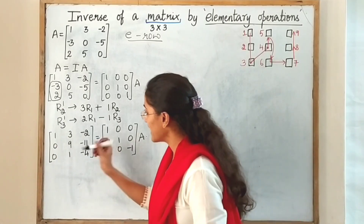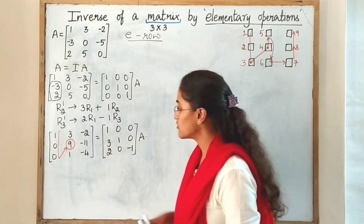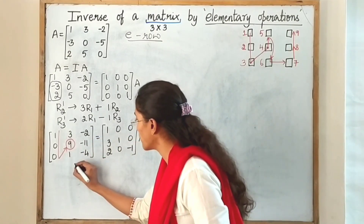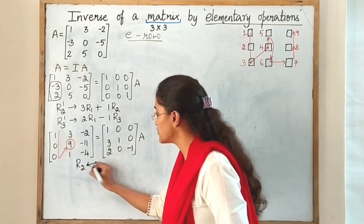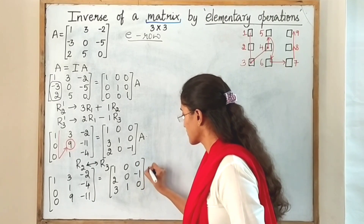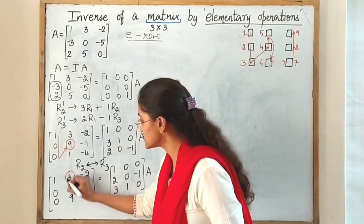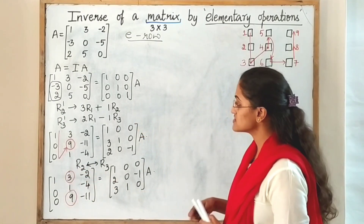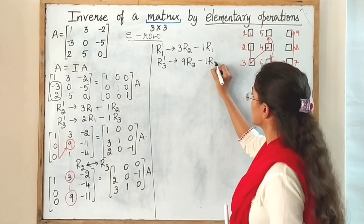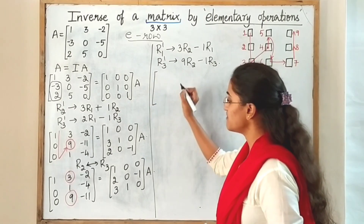Now we have to make this element as 1, since that is our next target. To make that as 1, I can easily interchange these two rows, and hence the operation will be to interchange R2 and R3 rows. In the next step, our target is to make these two elements 0. For those I'll put the operations, and after applying these operations we get the resulting matrix.